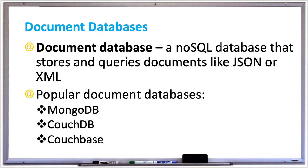However, document databases also support indexes on non-key values if the value is located in every document of a collection. Documents are assigned to a shard using a shard key, which identifies a document identifier or another value. If the shard key is a value, then an index of the shard key values is created to help locate database documents quickly. Documents are assigned to a shard with either a hash or range function.